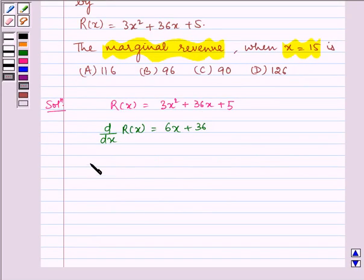Therefore, d/dx of R(x) at x = 15 equals 6 × 15 + 36, which equals 90 + 36, which equals 126.